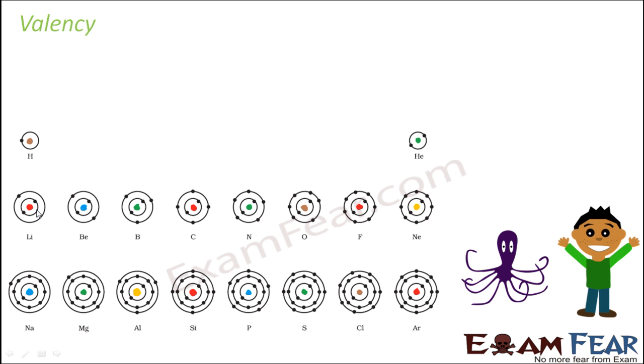The electrons present in the outermost shell are called valence electrons. Outermost shell electron.